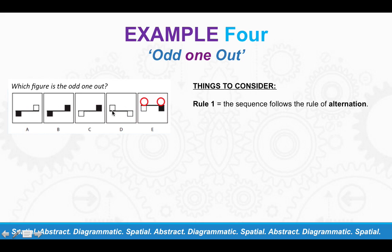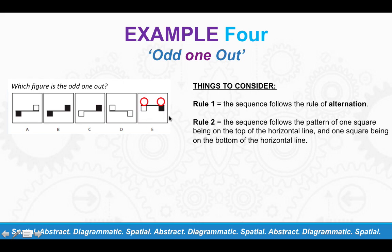And that is that a square needs to be on top of the horizontal lines. As you can see, A, B, C and D all have a square on top of the line. Whereas answer option E has only got two squares under the bottom of the line. So the odd one out is, in fact, answer E.